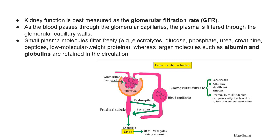As blood passes through the glomerular capillaries, plasma is filtered through the glomerular capillary walls. Small plasma molecules such as electrolytes, glucose, phosphates, urea, creatinine, peptides, and low molecular weight proteins filter freely, whereas larger molecules such as albumin and globulin are retained in the circulation.